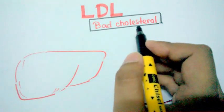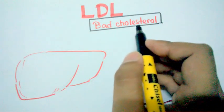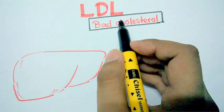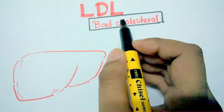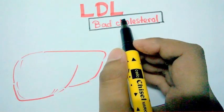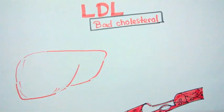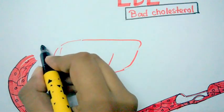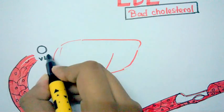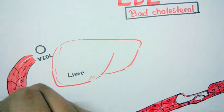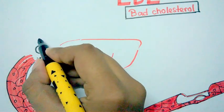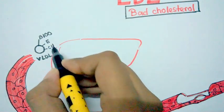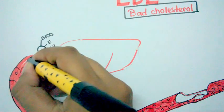Before understanding LDL, we should consider two other types of lipoprotein in our body. LDL stands for low density lipoprotein, meaning the protein part is pretty low. The liver secretes one type of particle called VLDL — very low density lipoprotein. VLDL has ApoB100, ApoE, and ApoC2 lipoproteins.